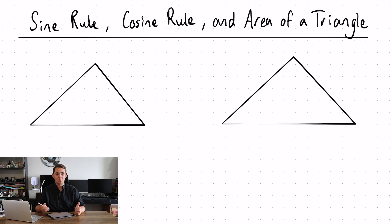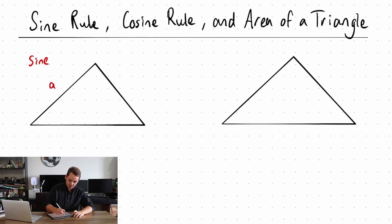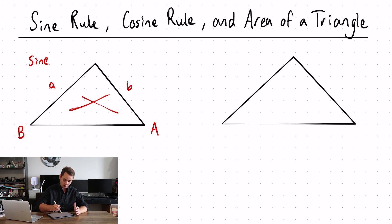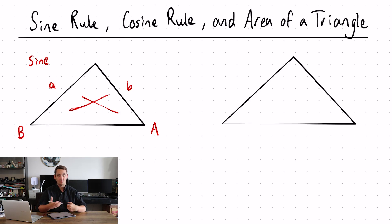Firstly, let's take a look at when we use the sine rule. We use the sine rule when you have two sides and two opposite angles. One of these pieces of information will be missing — either you won't know one of the angles or you won't know one of the sides — and then you use the sine rule to calculate the unknown angle or the unknown side.